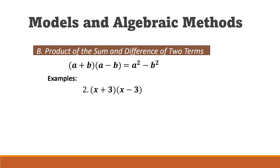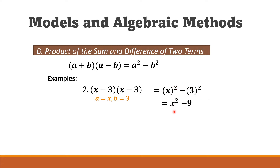Example two: multiply (x + 3)(x − 3). They have the same first and second terms but different operations. We identify the first term x and second term 3, then find the difference of squares: x² − 3² = x² − 9.